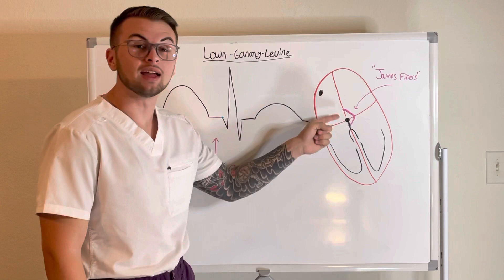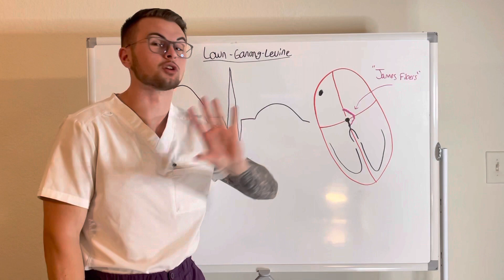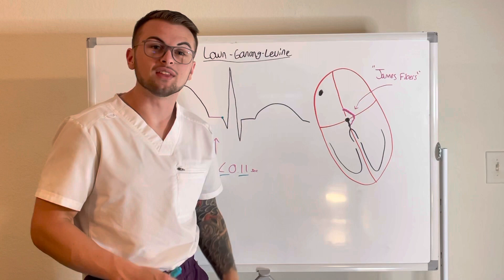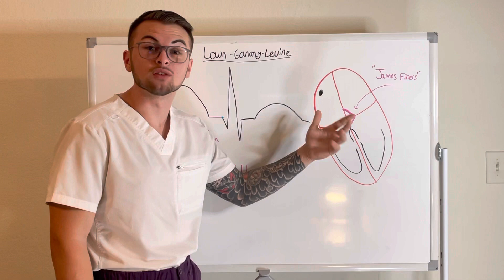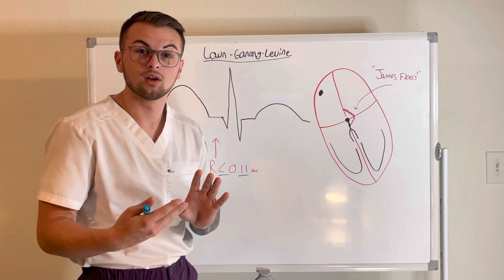These fibers are called James fibers, shown here in pink. Remember that LGL syndrome is associated with James fibers, as we will learn about other fibers and conditions later on. These James fibers run from the atria, bypass the AV node, and connect to the heart's normal electrical pathway in the ventricles — essentially skipping over the AV node.